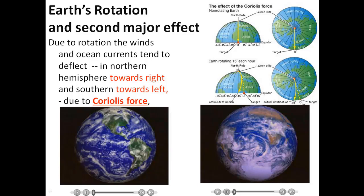If the same experiment is conducted from the South Pole — with a bullet fired from the South Pole toward the equator — instead of going in a straight path, it will bend toward the left. This is due to the Coriolis force, and this can be understood very well with the help of this animation.